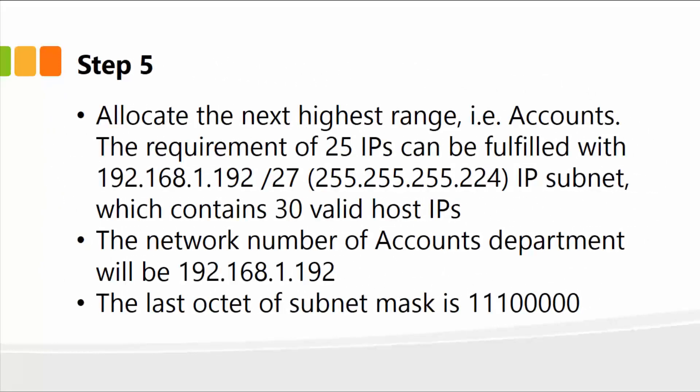Step five: we continue on with the next department, which is accounts. Same exact process — the last octet of the subnet mask is now borrowing another bit, which is 111 followed by five zeros. You can see how we move forward from one department in descending order: we had sales, then purchase, and now accounts. Accounts has 30 valid host IPs, which satisfies the requirement.